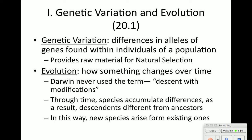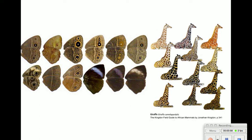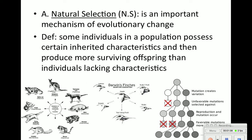Here's a diagram of genetic variation among giraffes as well as moths. Natural selection is the driving mechanism for evolution. The definition: some individuals in a population possess certain inherited characteristics and produce more surviving offspring than individuals that lack those characteristics. Basically, the trait being passed on has an advantage, allowing that organism to survive, reproduce, and pass on that trait.